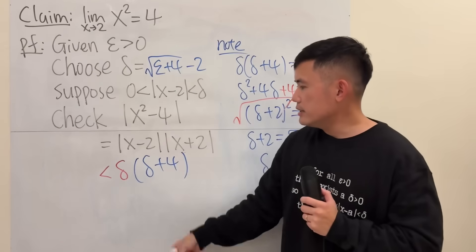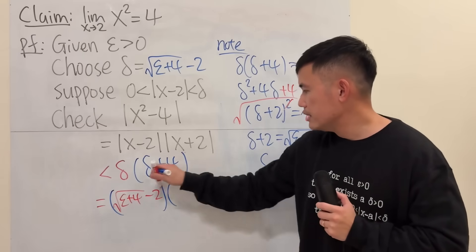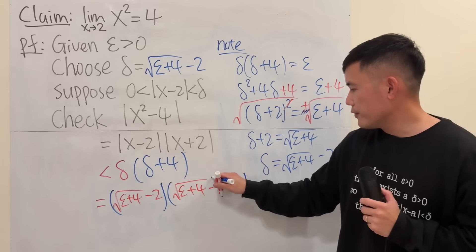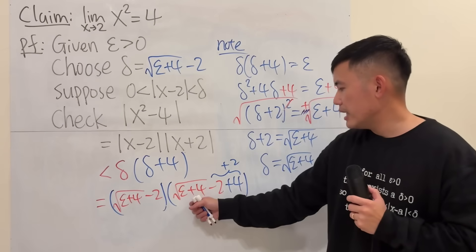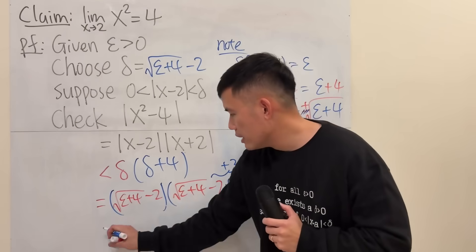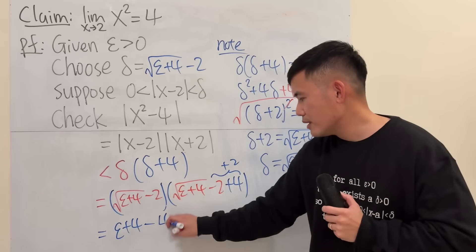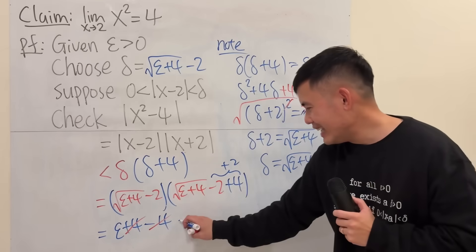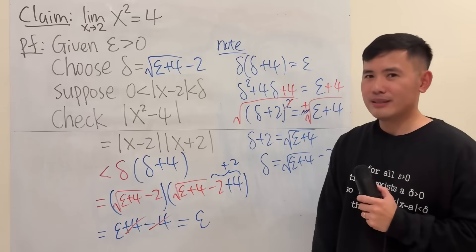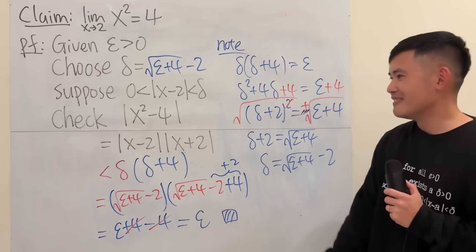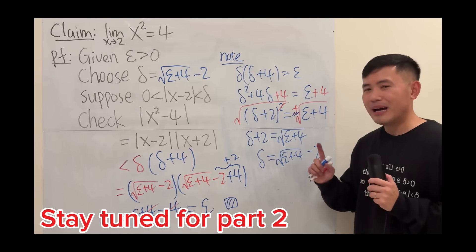Now we plug this delta back in. We have delta times delta plus 4, and since delta equals square root of epsilon plus 4 minus 2, delta plus 4 becomes square root of epsilon plus 4 plus 2. This is a difference of two squares: a minus b times a plus b equals a squared minus b squared. So we get epsilon plus 4 minus 4, and the 4s cancel, leaving just epsilon. Absolute value of x squared minus 4 is less than epsilon. The proof is done. This is the best delta you can find for this proof.